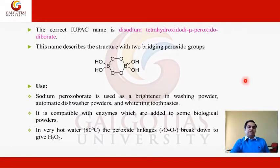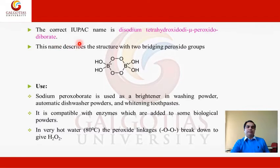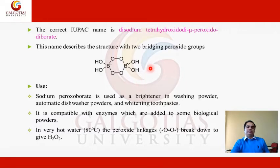The correct IUPAC name of sodium peroxoborate is disodium tetrahydroxido-di-mu-peroxido-diborate. This name describes the structure in which there are two bridging peroxide groups present. As we can see in the structure of sodium peroxoborate, there are clearly two peroxide linkages present in this structural formula.